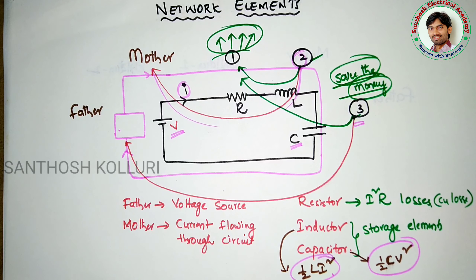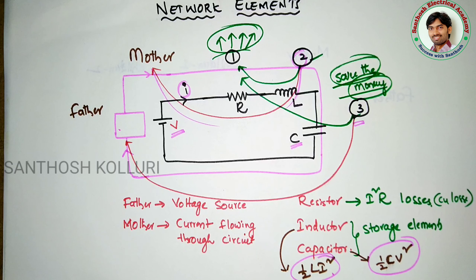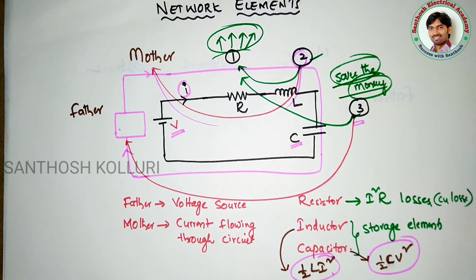So this is a small example to understand electrical network elements. The active elements are the voltage source and current source, and the passive elements are the resistor, inductor, and capacitor. In this example, the voltage source is the independent variable and the current is the dependent variable.